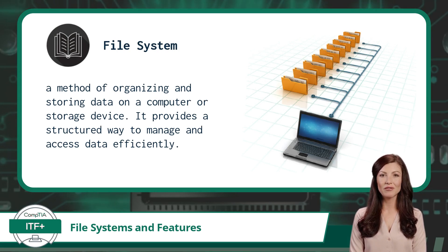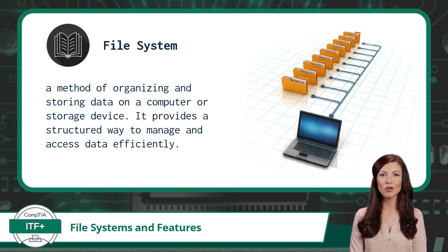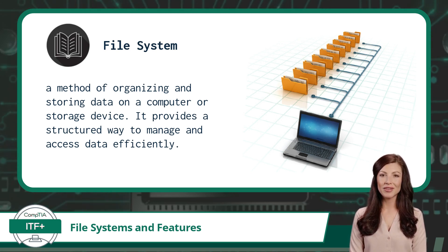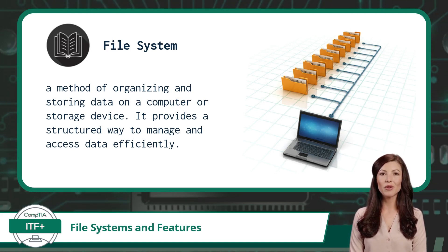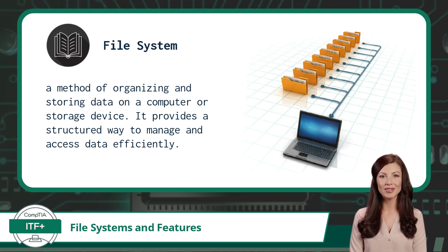A file system in the context of computing is a method of organizing and storing data on a computer or storage device. It provides a structured way to manage and access data efficiently. Think of a file system as a digital filing cabinet — just like you use a physical filing cabinet to organize and store your documents, a file system does the same for your digital files, ensuring they are neatly arranged and easily accessible.